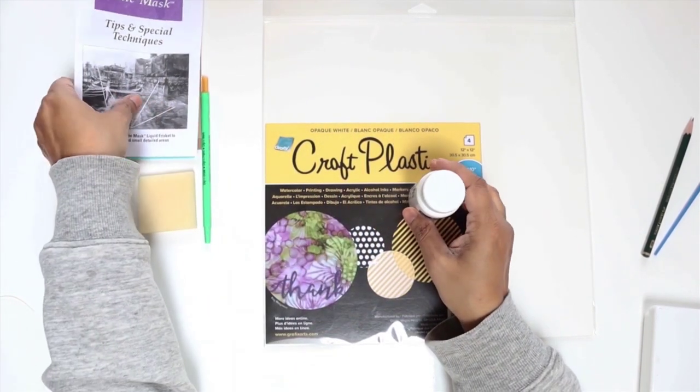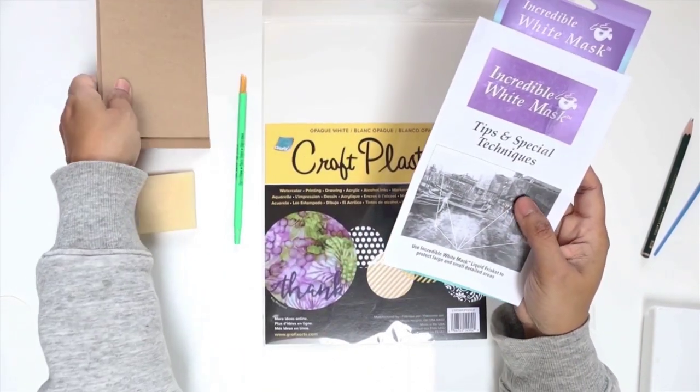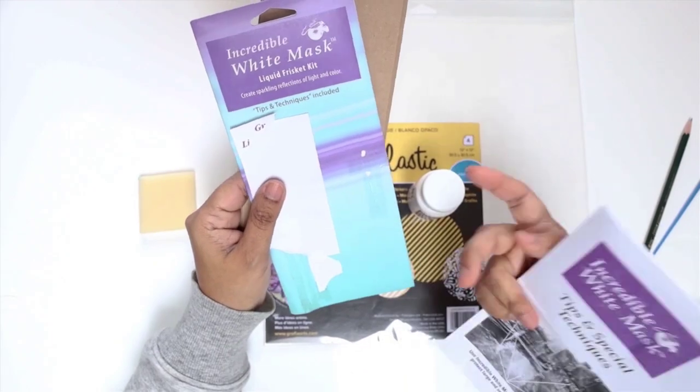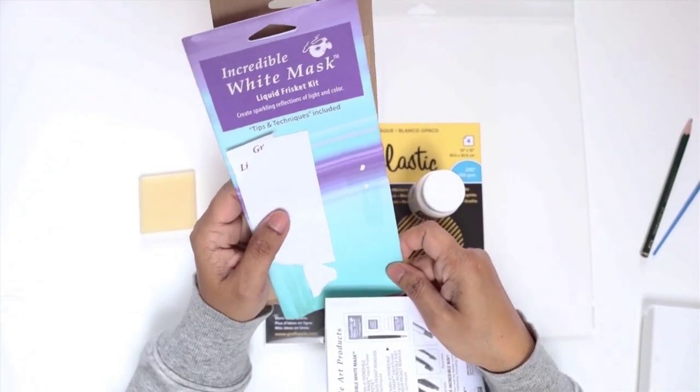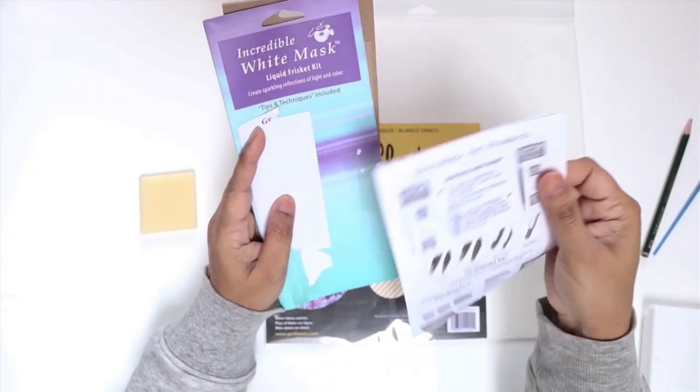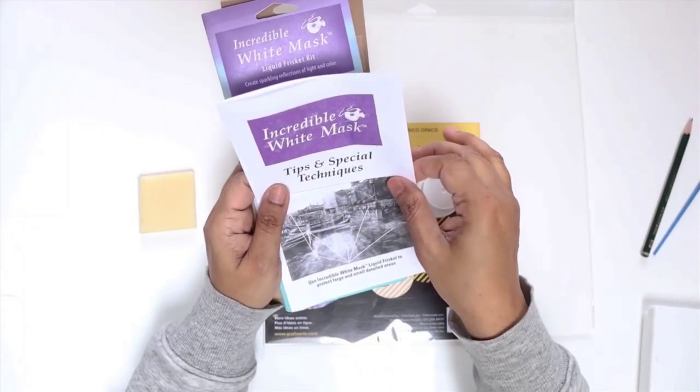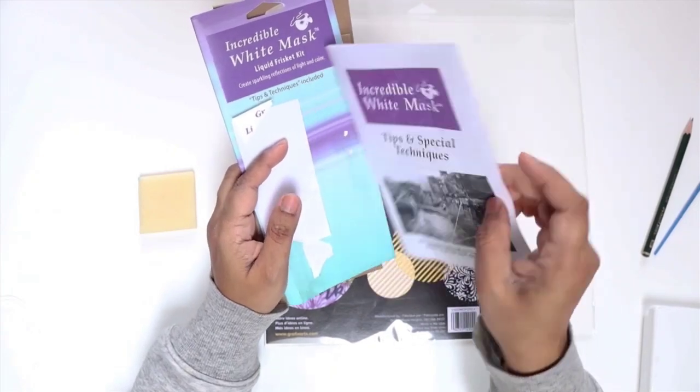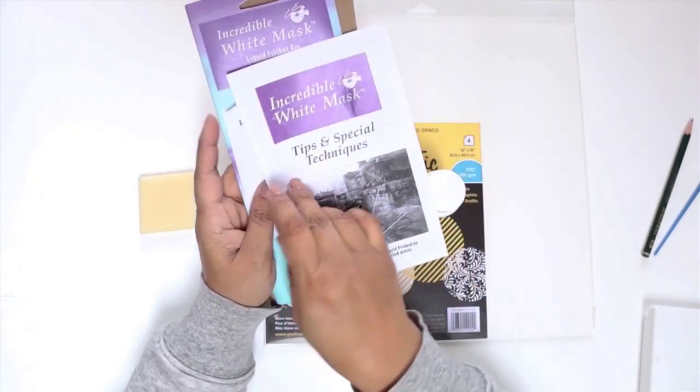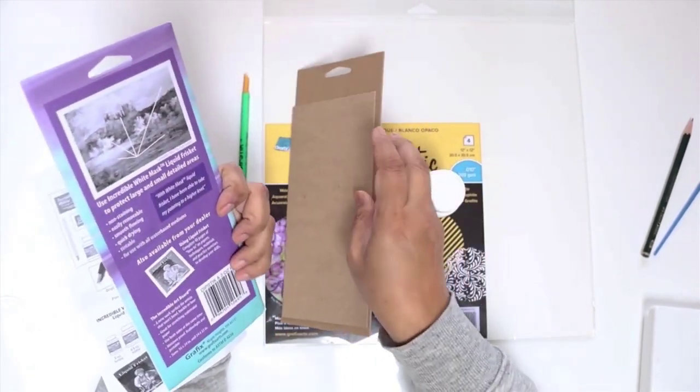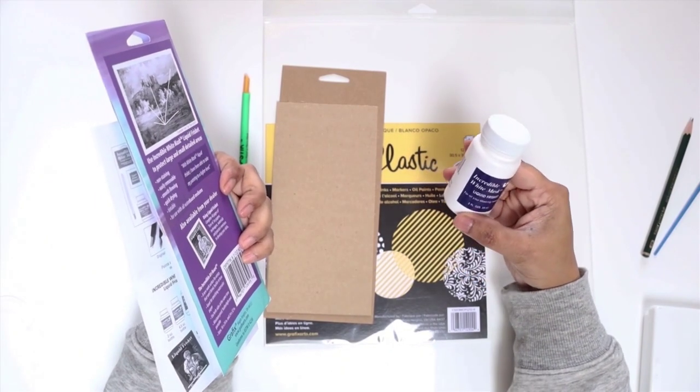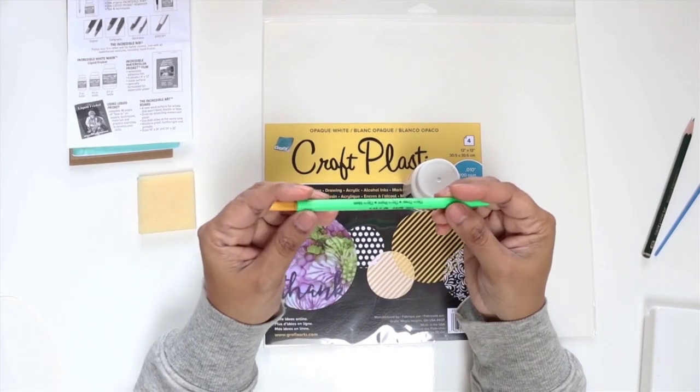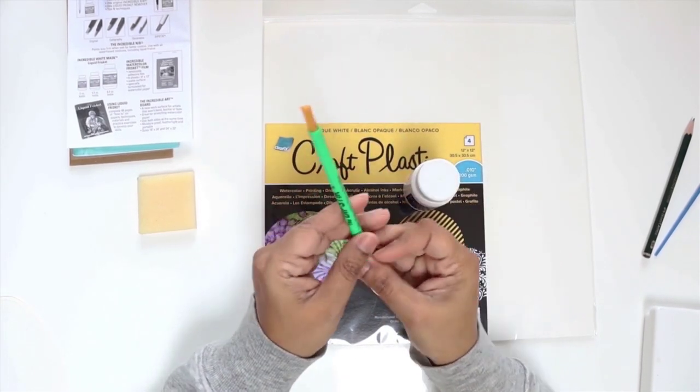It came as a little kit. I have just opened the bag and it says it's the Incredible White Mask Liquid Frisket Kit. It came with a little booklet with information on techniques, surfaces, and related products.